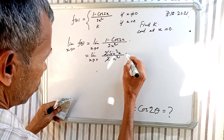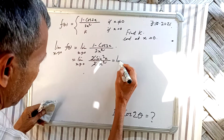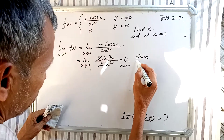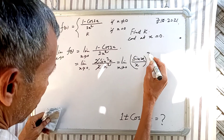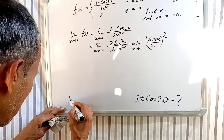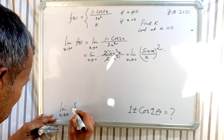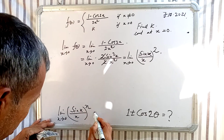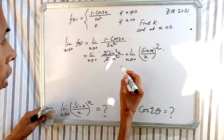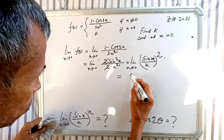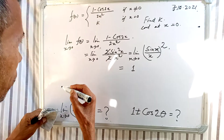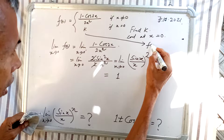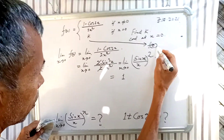Simplifying, we get the limit as x tends to 0 of (sinx / x)², which equals 1, using the standard result that the limit of sin(x)/x as x tends to 0 equals 1. So the limit of f(x) as x tends to 0 is 1.